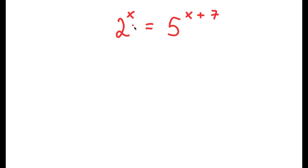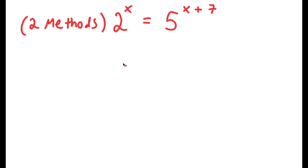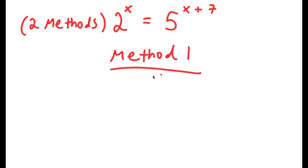Alright, so in this problem I have 2 to the power of x is equal to 5 to the power of x plus 7. I actually have 2 methods to solve this problem, so make sure to stick around for the video to see me solve both methods. For my first method, I'm going to write the problem: 2 to the power of x is equal to 5 to the power of x plus 7.